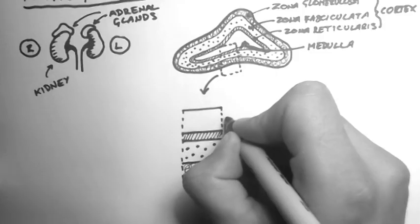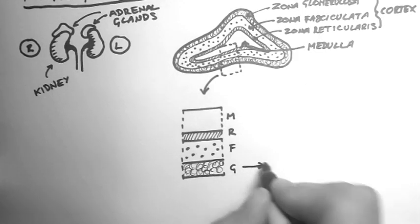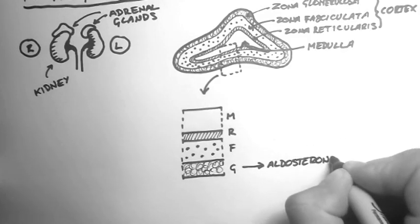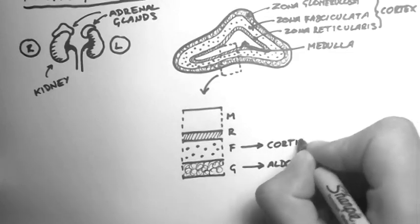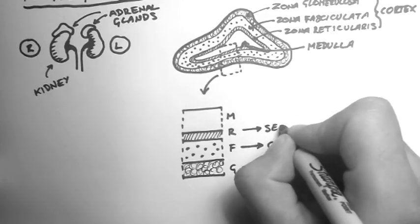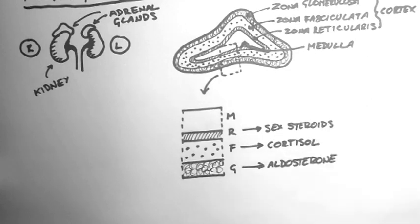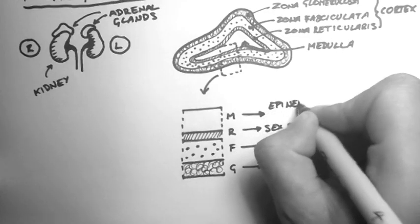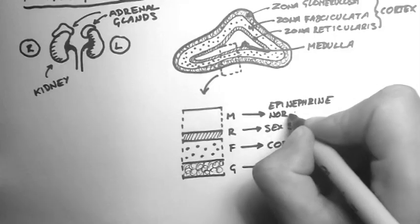Now they each produce different hormones. The zona glomerulosa produces aldosterone. The fasciculata produces cortisol. The reticularis produces sex steroids. And the medulla produces epinephrine and norepinephrine, or adrenaline and noradrenaline. That's the same thing.